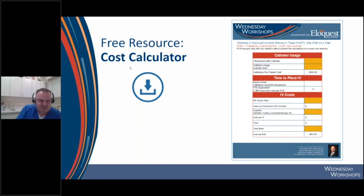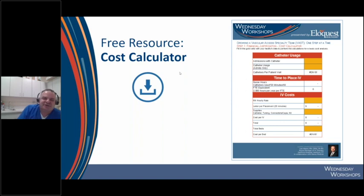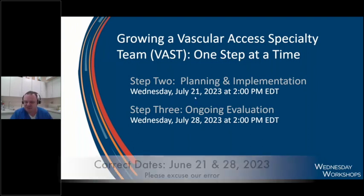This is the free resource — the cost calculator. It's very simple to use. You just need your admissions per year, which you can often find by Googling your facility, and the number of catheters purchased. It'll calculate the hours and all that. A really good resource for all of you — if you need help, please reach out to me and I can walk you through it. Thank you.